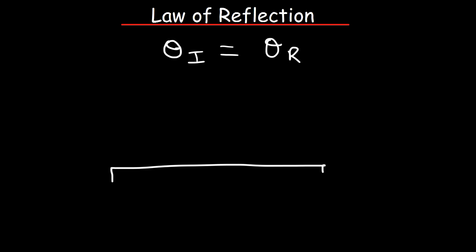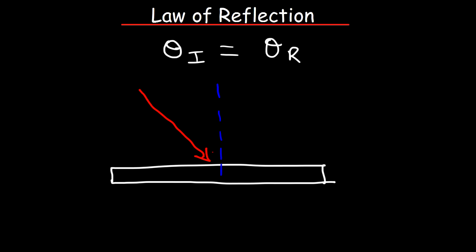As an example, let's say we have a flat surface, and this is the normal line, which is perpendicular to the surface. Let's say we have a light ray that strikes the surface at an angle of incidence.